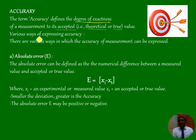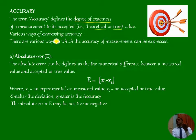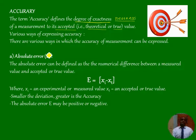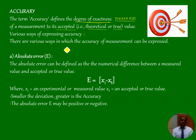There are various ways of expressing accuracy, and how to express accuracy is very important. We know accuracy is the exactness or nearness of a measurement to its accepted, theoretical, or true value. But how do we express this accuracy? We need some scientific method by which we can express it. There are various ways in which the accuracy of a measurement can be expressed.